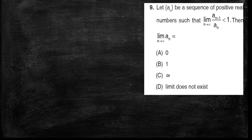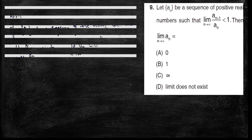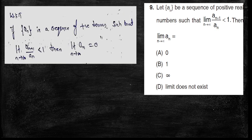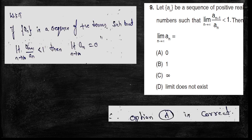Ninth question — this is a direct result. Let an be a sequence of positive real numbers such that the limit of a(n+1)/an as n tends to infinity is less than 1. Then the limit of an equals 0. Therefore, option A is the correct answer.